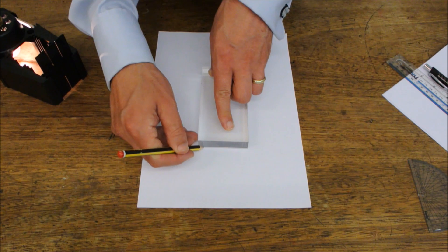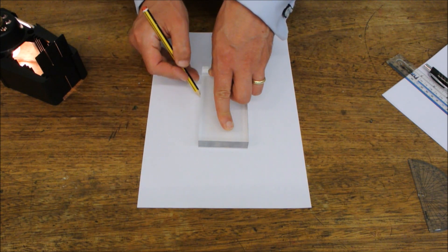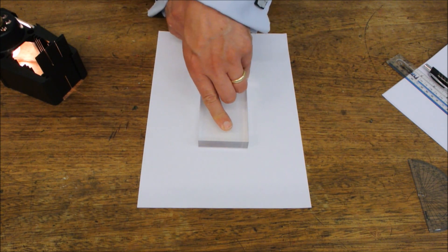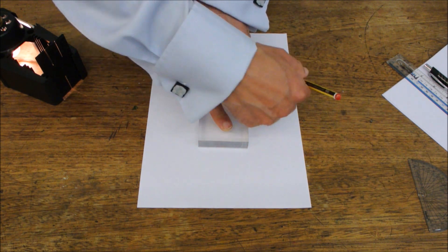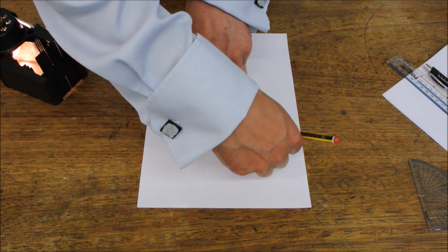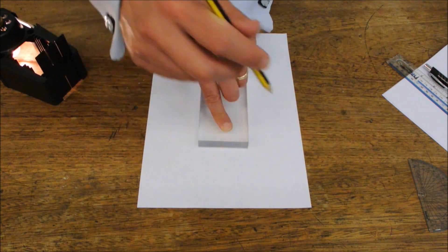First thing you do is you take a perspex or glass block and draw carefully around the outside with a sharp pencil like so.